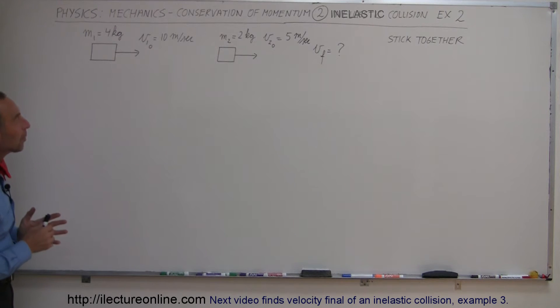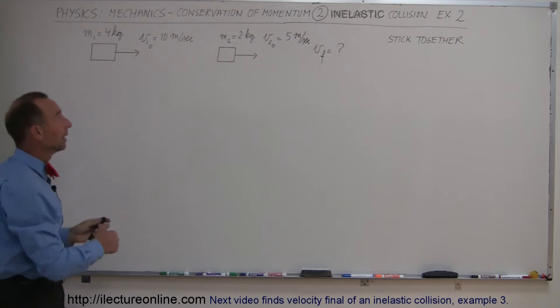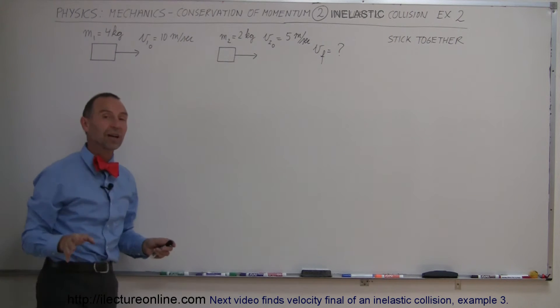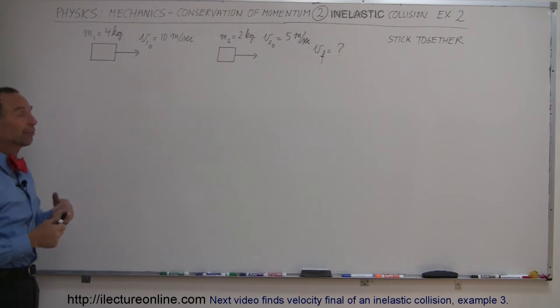And here in our second example, we now have two objects. One still, the 4 kilogram object moving to the right at 10 meters per second before the collision. And the second object, the 2 kilograms, is now moving to the right at 5 meters per second. So not unlike in the first example, the second object is moving.